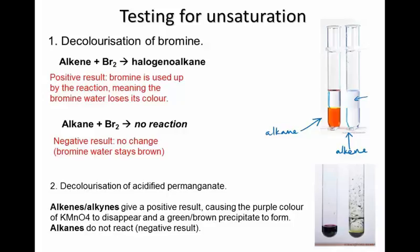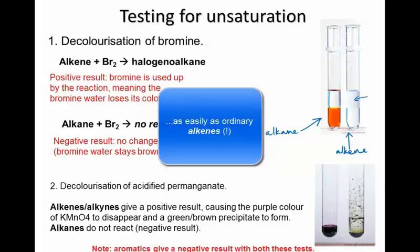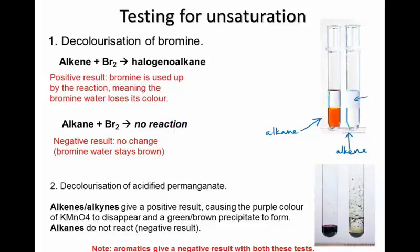As a final note, while these two tests are generally used to detect unsaturation — that is, double or triple bonds — they give a negative result, that is, no colour change, with aromatic compounds, despite the fact that aromatic compounds have double bonds in them. This is because the characteristic feature of those alternating single and double bonds that aromatic compounds have gives them a particular stability, which means that they don't react as easily as ordinary alkenes. So you can submit an aromatic compound to the bromine test or the permanganate test, and they will behave as if they were an alkane.